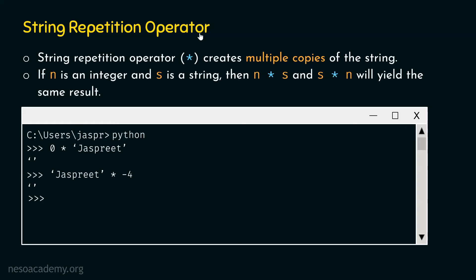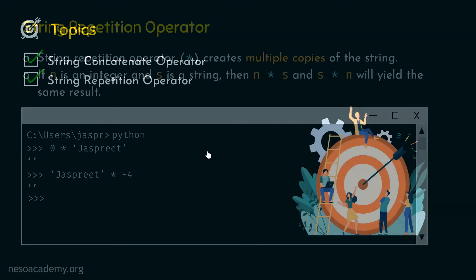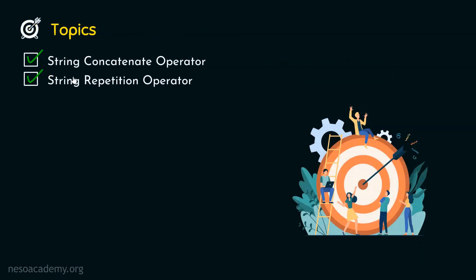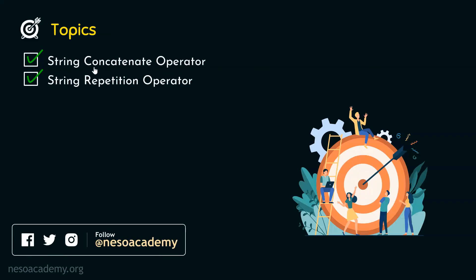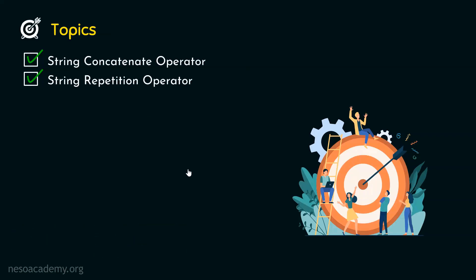This is all about string repetition operator. The string repetition operator helps us create multiple copies of a string. We provide a value to n, and n star s creates n copies of s. Similarly, s star n also creates n copies. The number of copies depends entirely on the value of n. We have learned what string concatenate operator is and how it helps concatenate two or more strings. We have also learned string repetition operator, which creates multiple copies of a string. That's it for this lecture — thank you for watching.